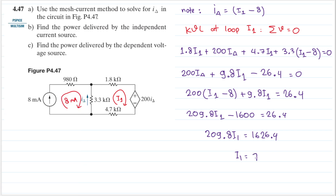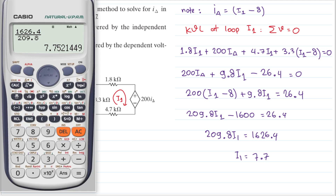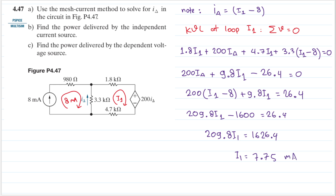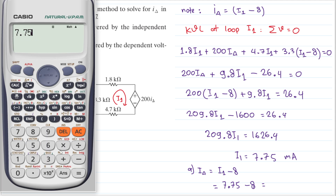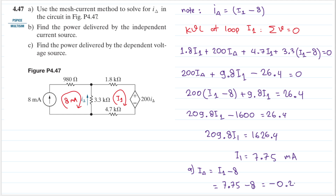Calculating: i1 equals 1626.4 divided by 209.8, which gives 7.75 milliampere. Now for i_delta: i_delta equals i1 minus 8, so 7.75 minus 8 equals minus 0.25 milliampere. That is the answer for question a.